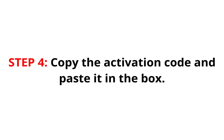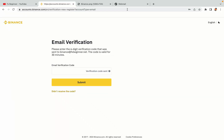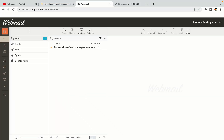Step 4: A confirmation code will be sent to your mail. Open your mail inbox, copy the code and paste it in the box to fully activate your Binance trading account.